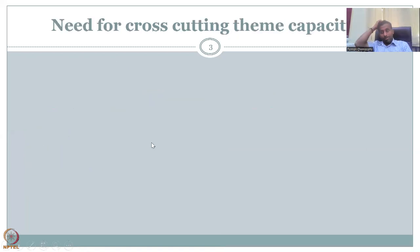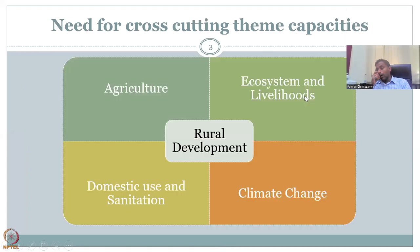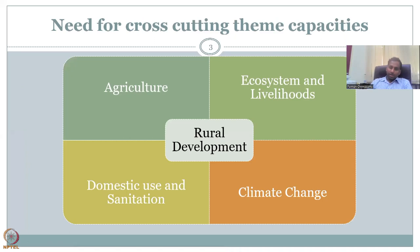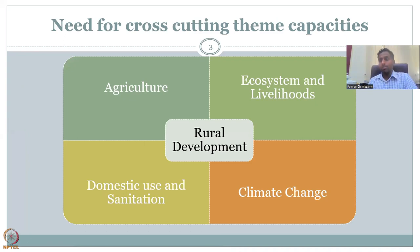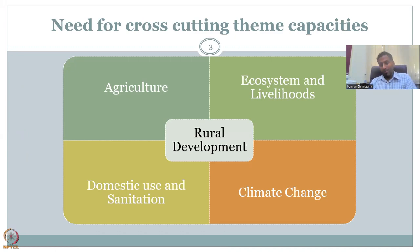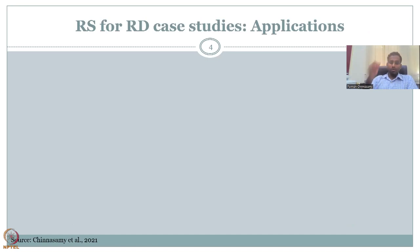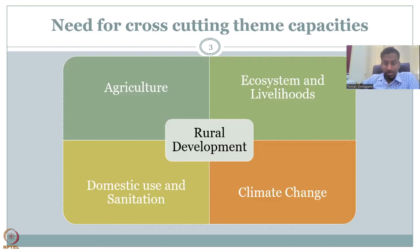Please remember that all these options exhibit a cross-cutting theme, because rural development is a complex entity. There's agriculture and rural development, ecosystem and livelihoods, domestic use and sanitation, and climate change, which is hampering rural development scenarios. We have to be very focused on collecting data and mapping them so that we attenuate or reduce the impact on ecosystems. Remote sensing has been identified for each and every parameter in this lecture.